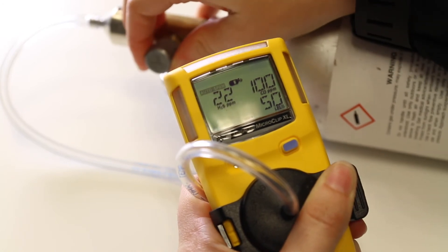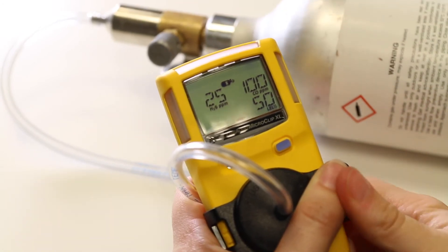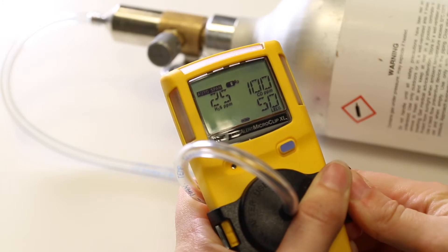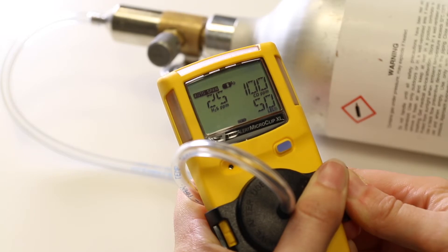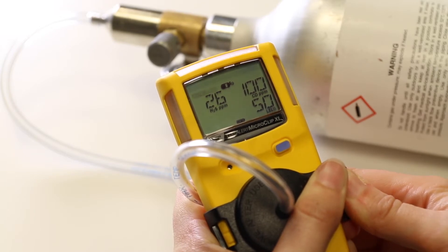The sensors of the MicroClip XL are situated on the lower front part of the monitor. Turn the gas on and the sensor should start to respond. You should see values on the screen similar to those on your gas cylinder.